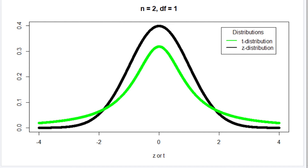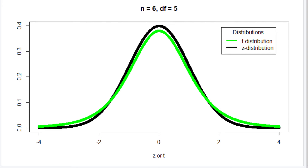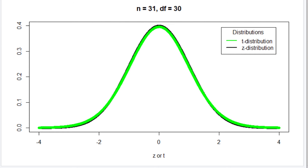Increasing the sample size to 4, so we have 3 degrees of freedom, the t-distribution looks quite a bit closer to the z-distribution. If the degrees of freedom are 5, we are even closer. Let the degrees of freedom be 30, and the distributions are practically on top of each other, although they are still not exactly the same. This illustrates the fact that as the sample size and degrees of freedom increase, the t-distribution starts to look more and more like the standard normal z-distribution.